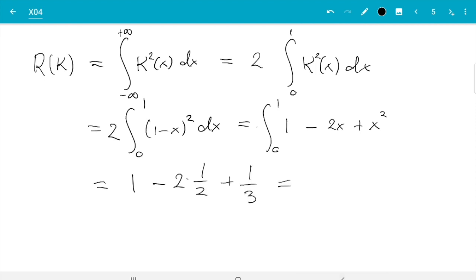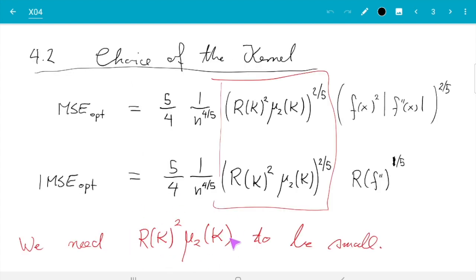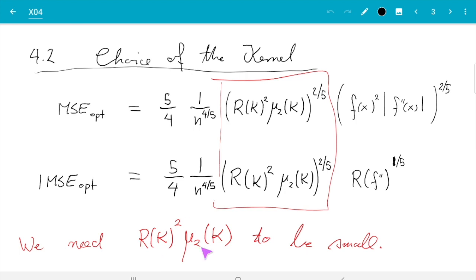So it's 2 times integral 0 to 1, 1 minus 2 times 1 half plus 1 third. And I forgot 2 here. So let's add 2. So it's 2 times these two terms cancel. 2 times 1 third is 2 thirds. And here is the quantity we wanted to minimize. So roughness squared times second moment is 2 thirds squared times 1 sixth is 4 over 54, I believe is 2 over 27. And if you work that out, that's approximately 0.074. Good. So that was easy.